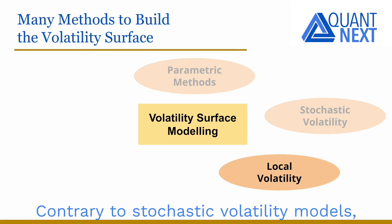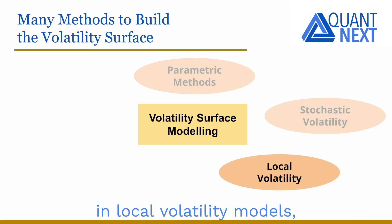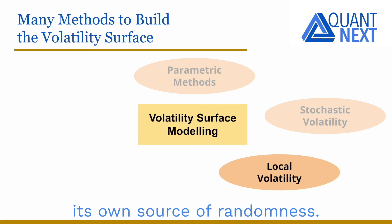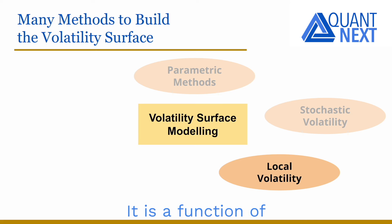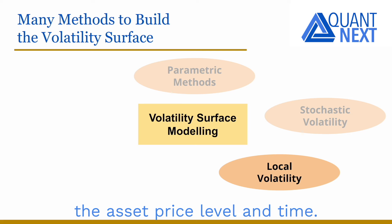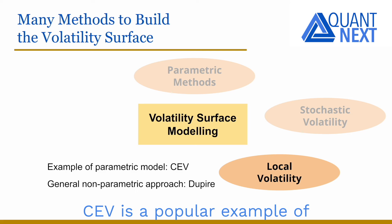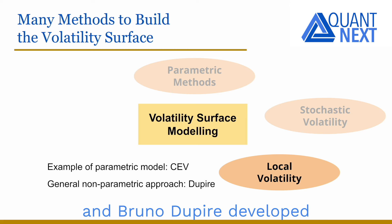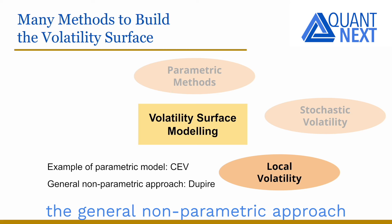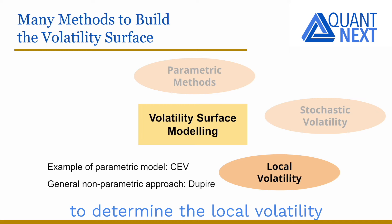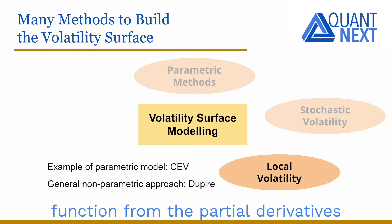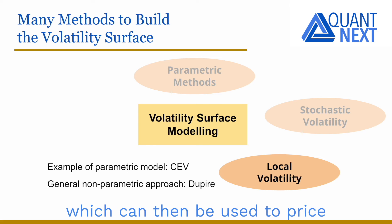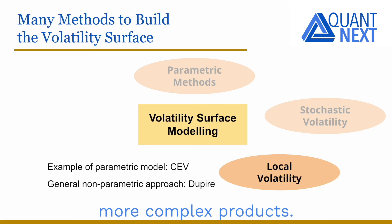Contrary to stochastic volatility models, in local volatility models the volatility does not have its own source of randomness — it is a function of the asset price level and time. CEV is a popular example of a parametric local volatility model, and Bruno Dupire developed the general non-parametric approach to determine the local volatility function from the partial derivatives of vanilla call prices, which can then be used to price more complex products.